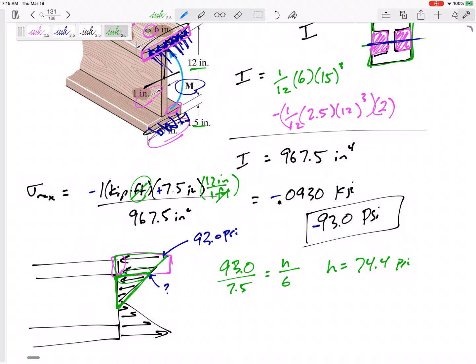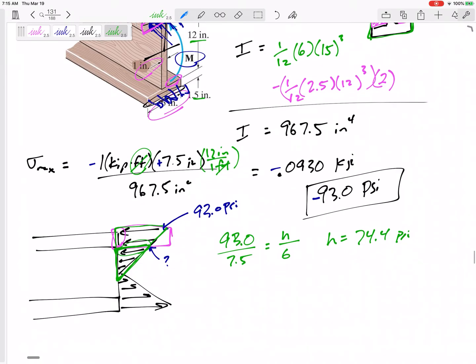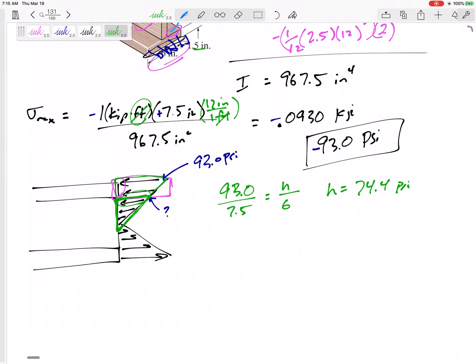So if I have a distributed load that kind of goes from 74.4 to 93.3, I'm just going to find the average. The average of that stress at the top. Well, before I find the average.